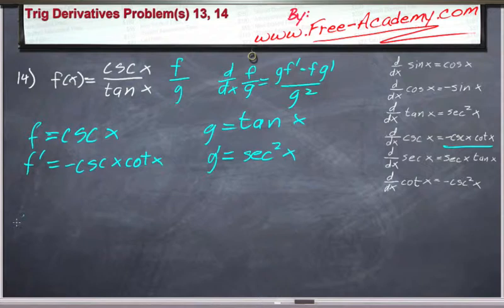Our quotient rule is gf prime minus fg prime over g squared. So let's plug and chug. f prime of x is going to be equal to tangent of x,